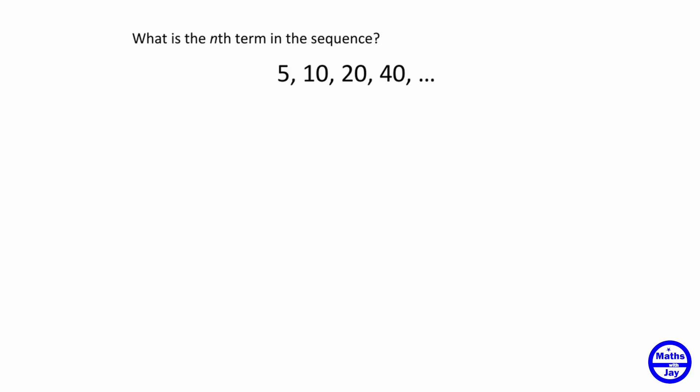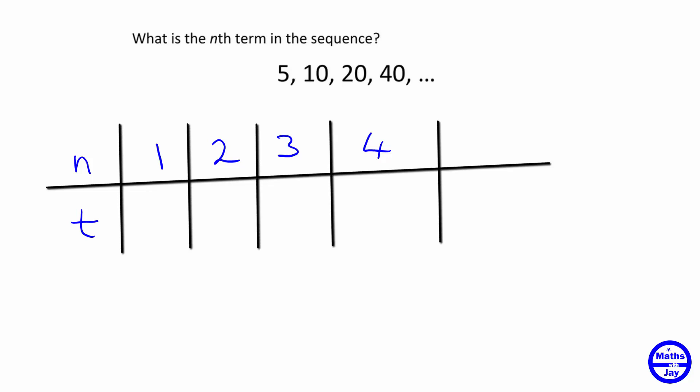the n numbers. We want to think about what's the first term, the second term, the third term, the fourth term. So those are our n and we want the nth term, so let's put t there. The first term is 5.